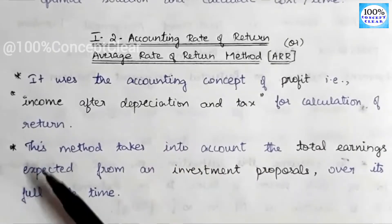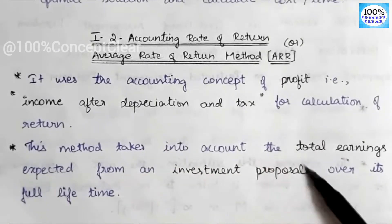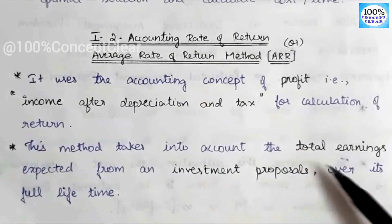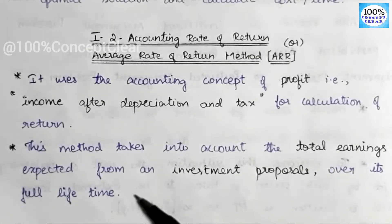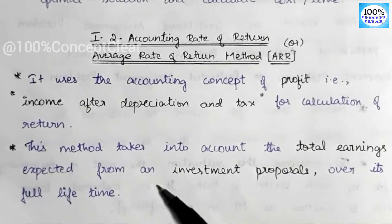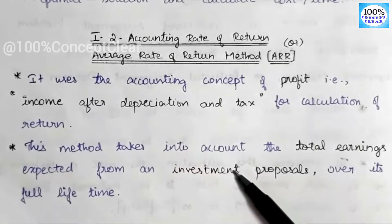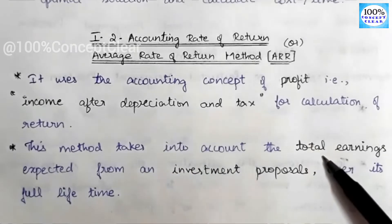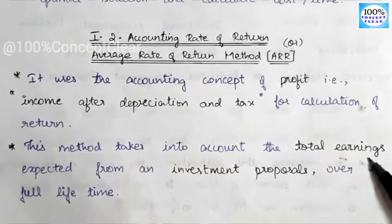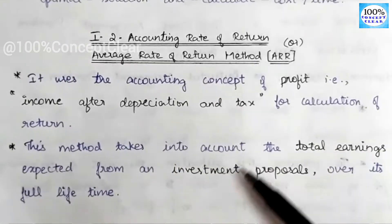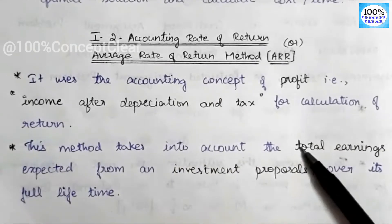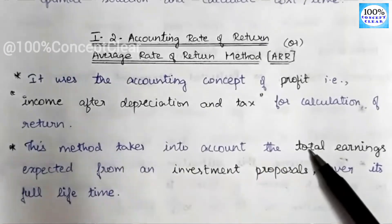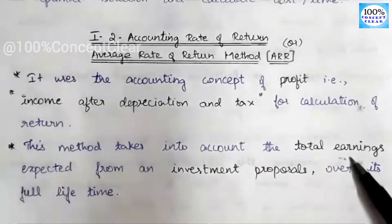This method takes into account the total earnings expected from an investment proposal over its full lifetime. So in this method, we have to calculate the total earnings over the full lifetime of the investment.